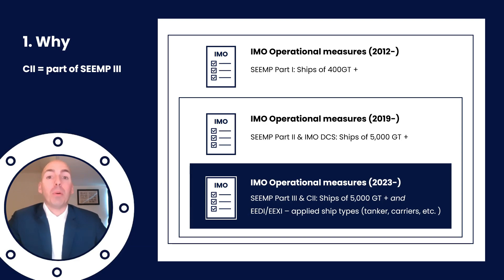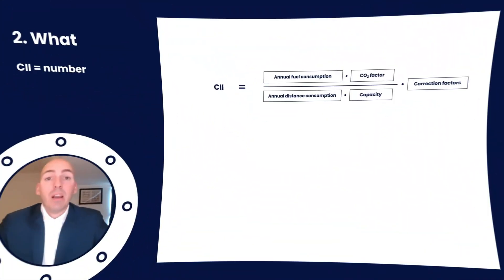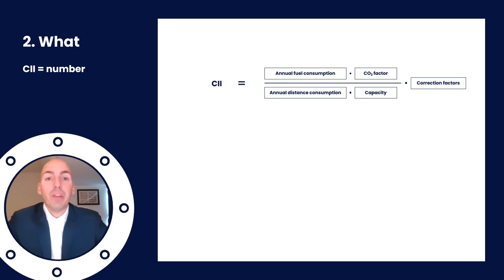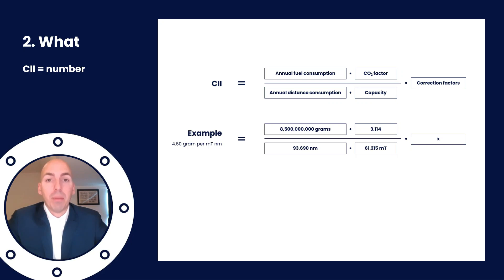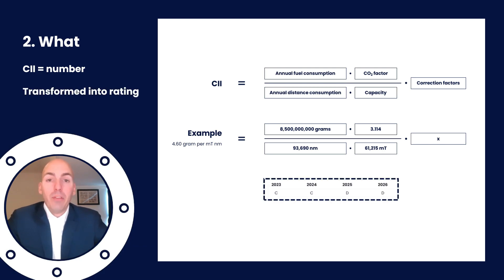So what exactly is CII? CII is a number. It shows you how efficiently a ship transports goods or passengers. It's given in grams of CO2 emitted per cargo carrying capacity and nautical mile. Here's an example where the CII is calculated by dividing the annual CO2 emissions — fuel consumption multiplied by emission factor — by the amount of distance sailed in nautical miles multiplied by the capacity of the ship. This calculation is performed each year and evaluated by a recognized organization, usually class, based on IMO DCS data.